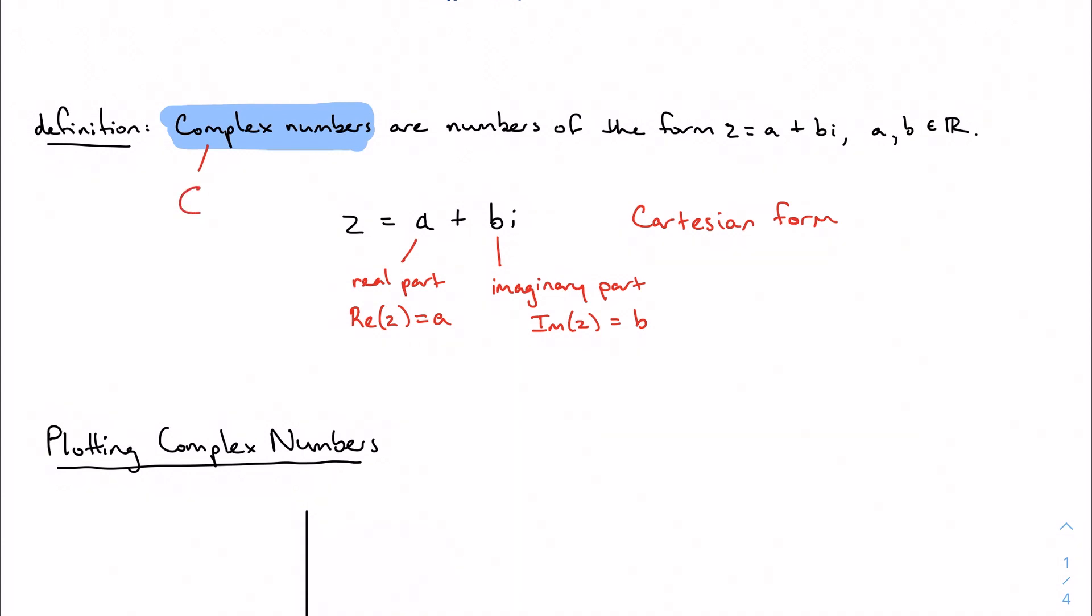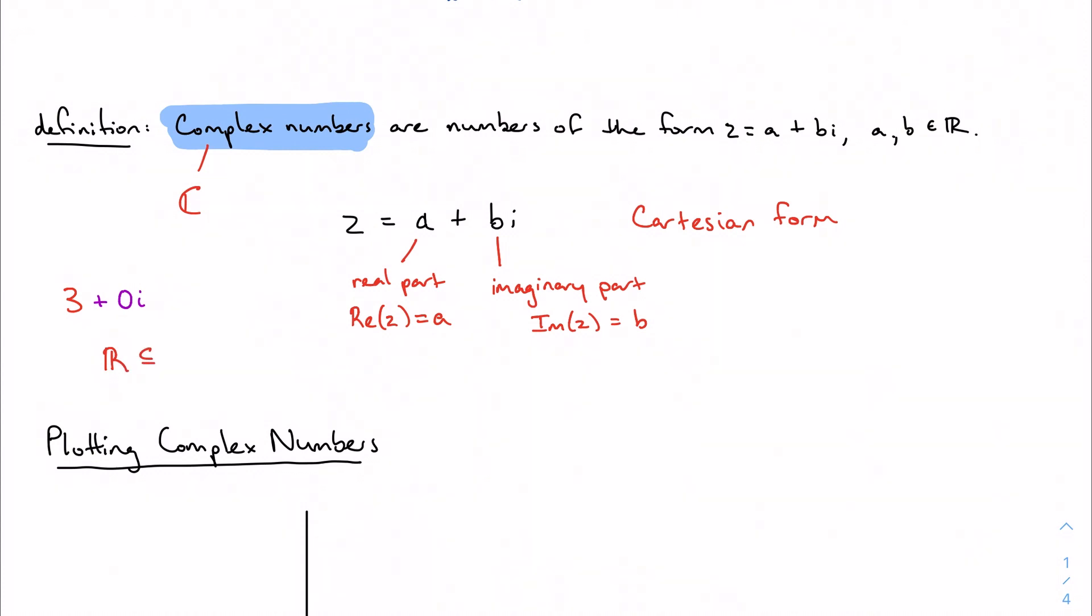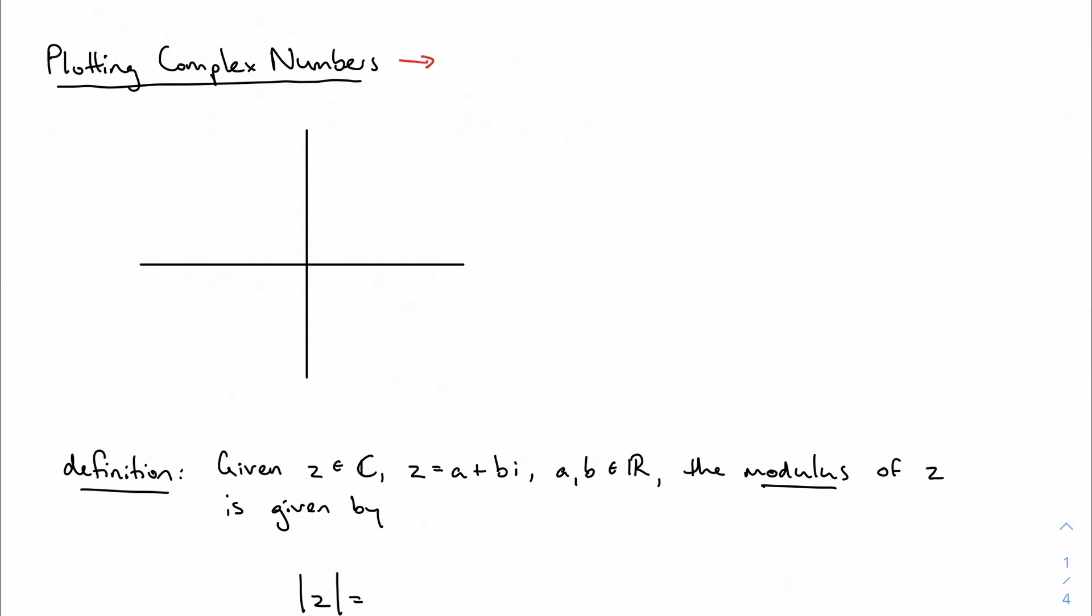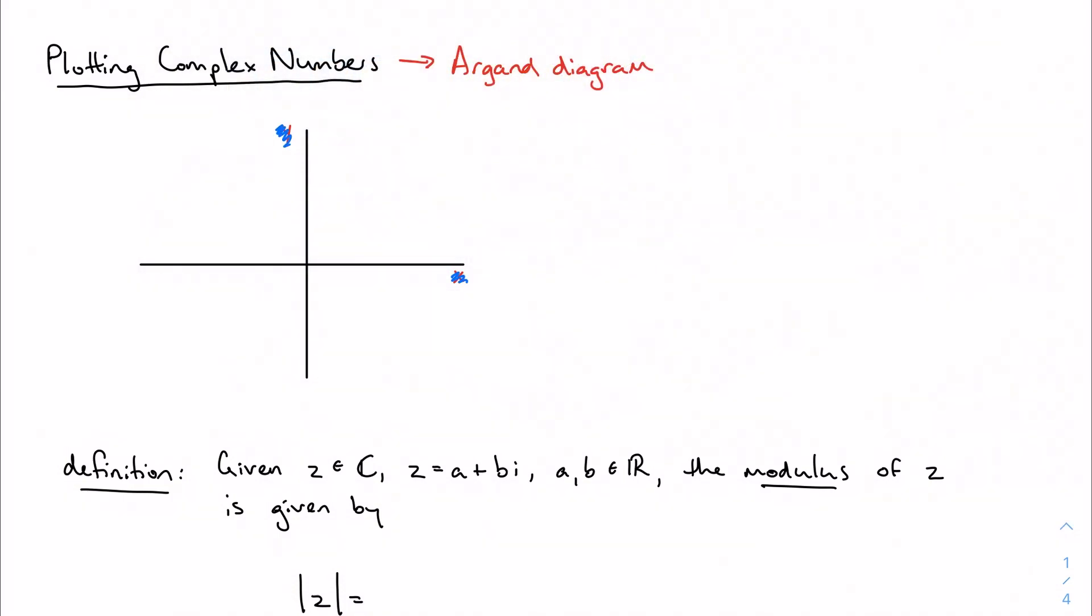We represent the set of all complex numbers with this fancy-looking C, and it's worth noting that real numbers are actually complex numbers just with a missing imaginary part. The number 3 can be rewritten as 3 plus 0i, so the real numbers are a subset of the complex numbers. We can plot these on an Argand diagram or the complex plane, and instead of the x and y axes, we'll rebrand our axes as the real axis and the imaginary axis.